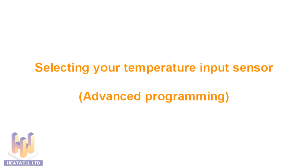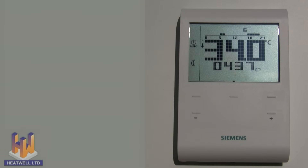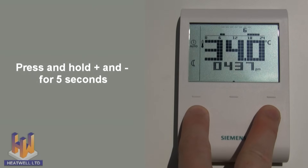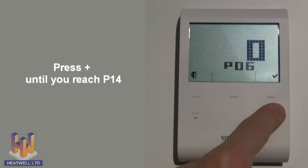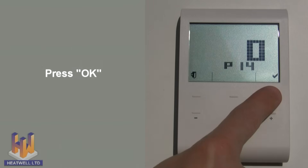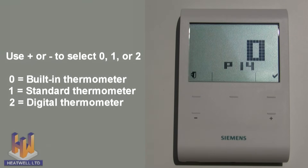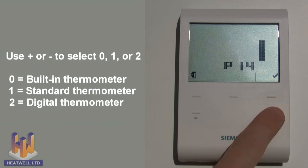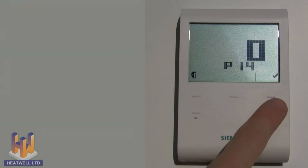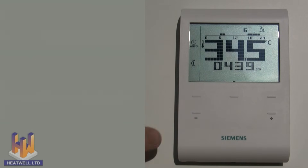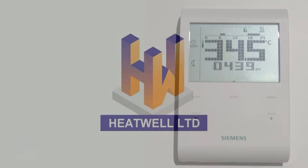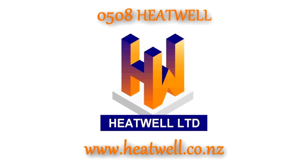Selecting your temperature input sensor. This option allows you to choose which type of temperature sensor you will use for your thermostat. To adjust these settings, go to the advanced settings menu by pressing the plus and minus buttons for 5 seconds, then let go. P01 will show. Use the plus button until you see P14 and press the OK button. Now use the plus or minus button to change between 0, 1, and 2 — 0 means the unit will not use an input sensor and will rely on its built-in thermometer, 1 means the unit will use a standard external temperature sensor, and 2 means the unit will use a digital external temperature sensor. In this case we will select 1 for a standard temperature sensor located within the floor. Press OK to confirm and then press the mode button to exit. If your sensor is connected correctly, you will see the input logo on the screen. If you have any questions, please give us a call on 0508 Heatwell or heatwell.co.nz.